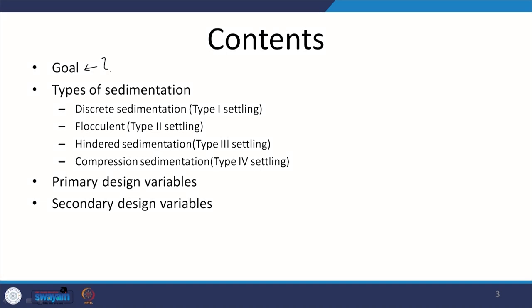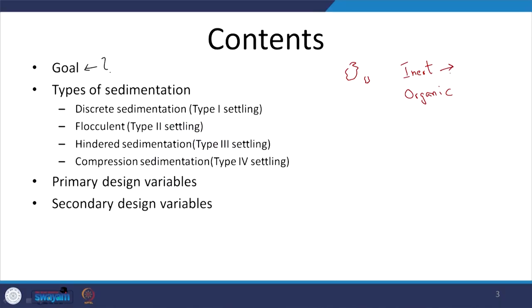Let us look at what we want to achieve here. We have suspended particles — relatively bigger, some smaller — some of these are inert and some have organic content. If inert particles are not removed, they will cause issues down the line in other unit processes by settling out, leading to relatively lesser effective volume, and can also lead to abrasion and wear of relevant machinery. The bigger or heavier inert content is removed during preliminary treatment or headworks, but there will be some suspended particles smaller than grit, along with suspended organic content.